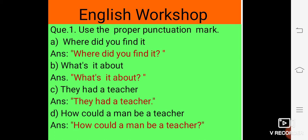Second, B. What's it about? The same as above. C. They had a teacher. This is a simple sentence. They had a teacher. So we use only the inverted commas.